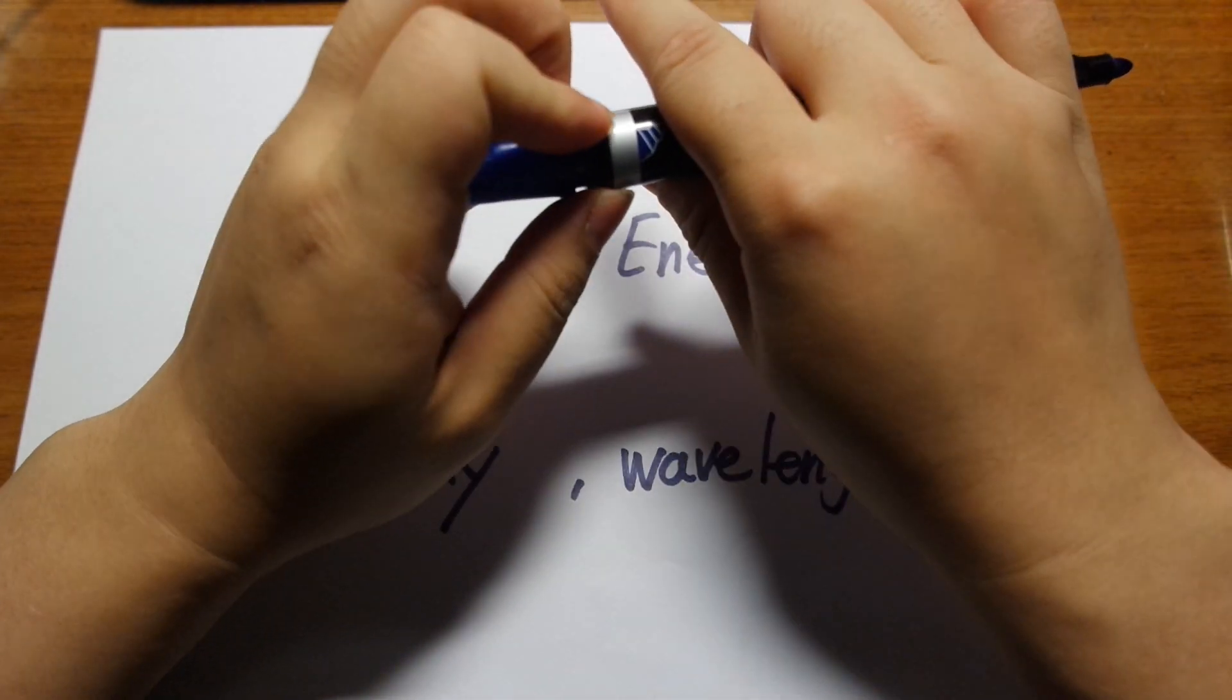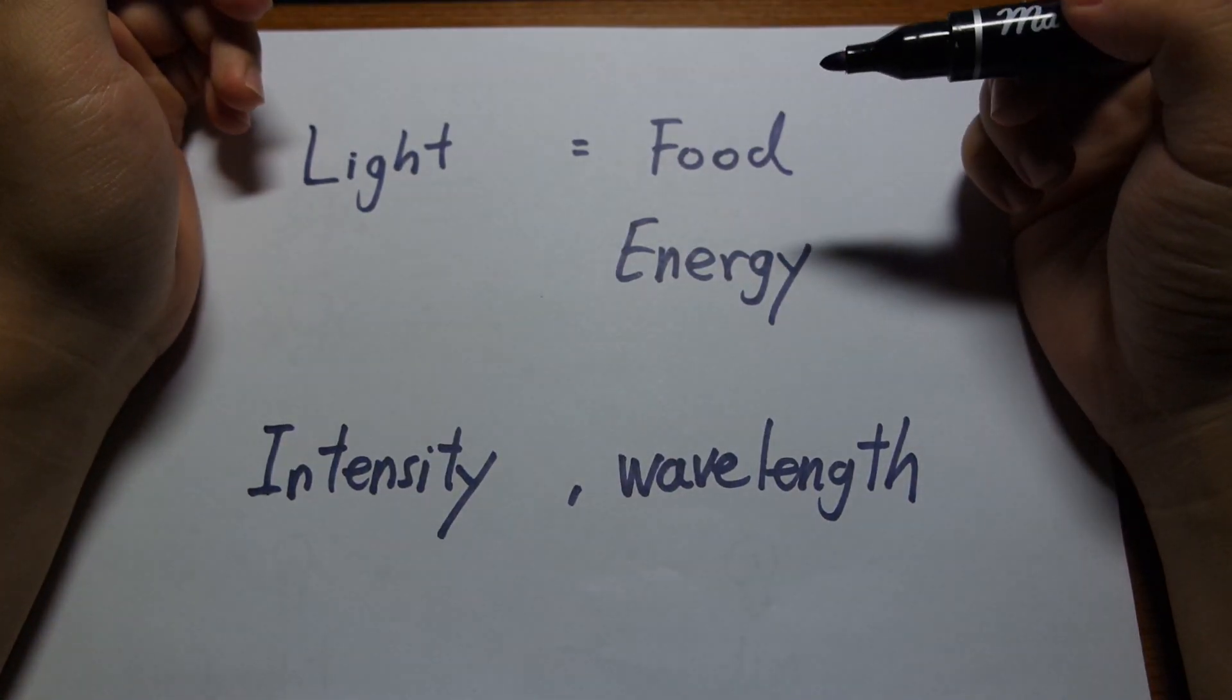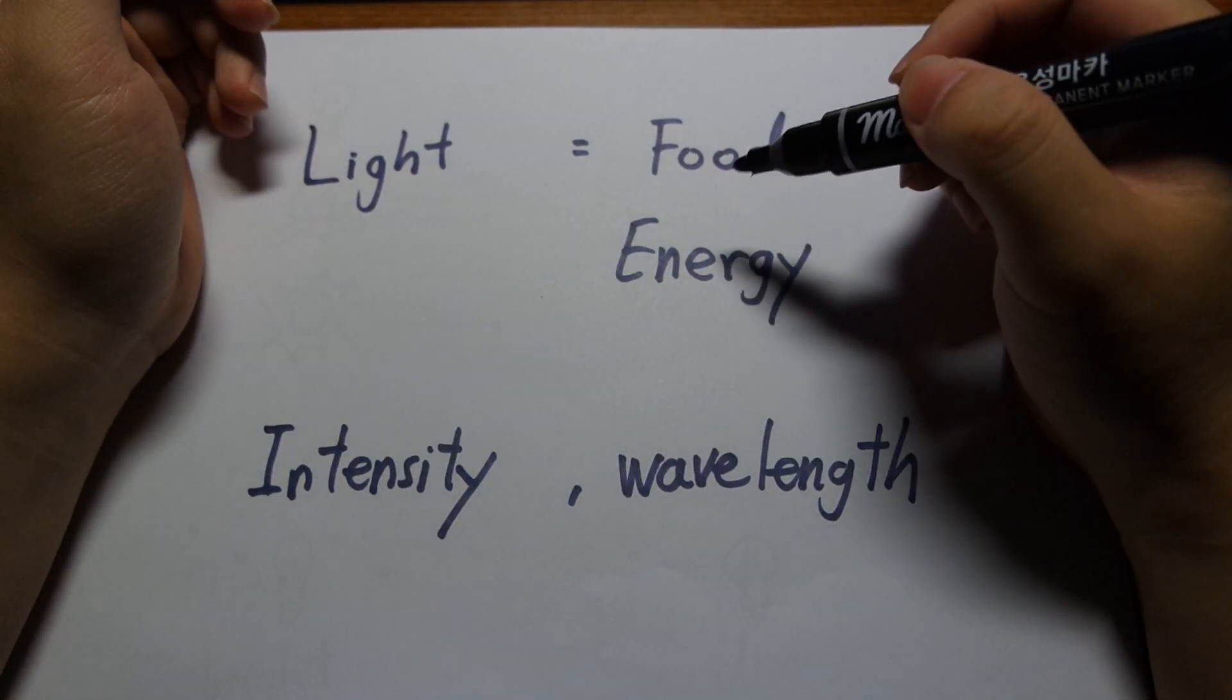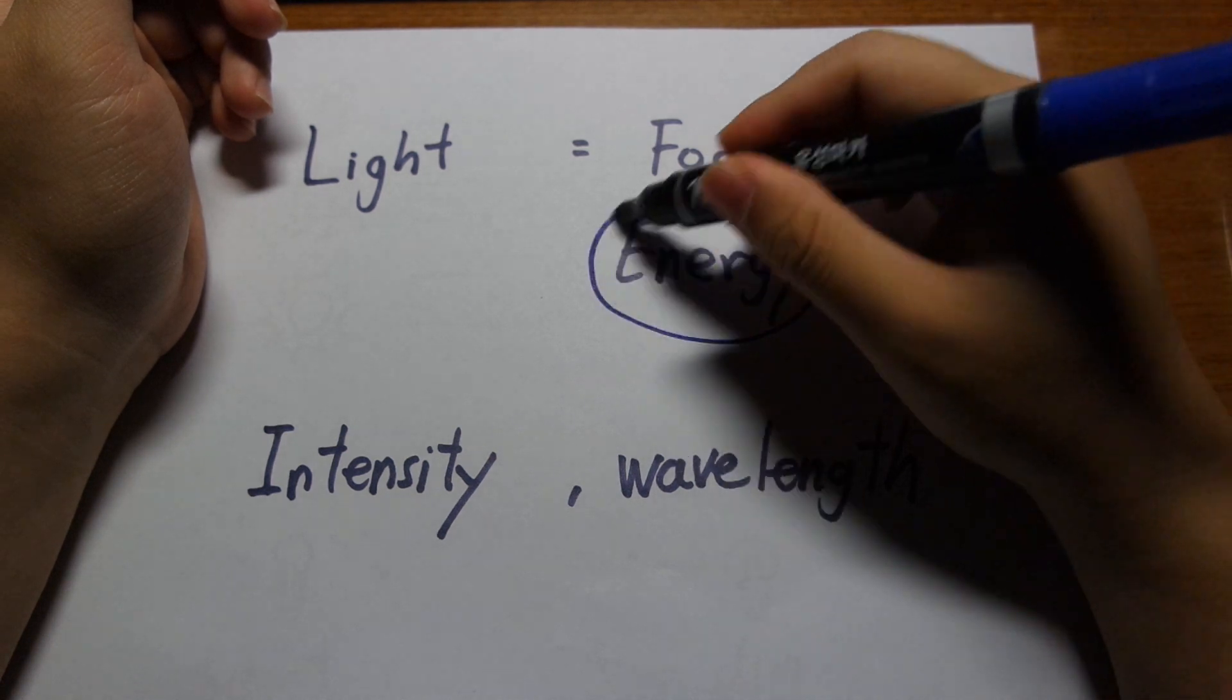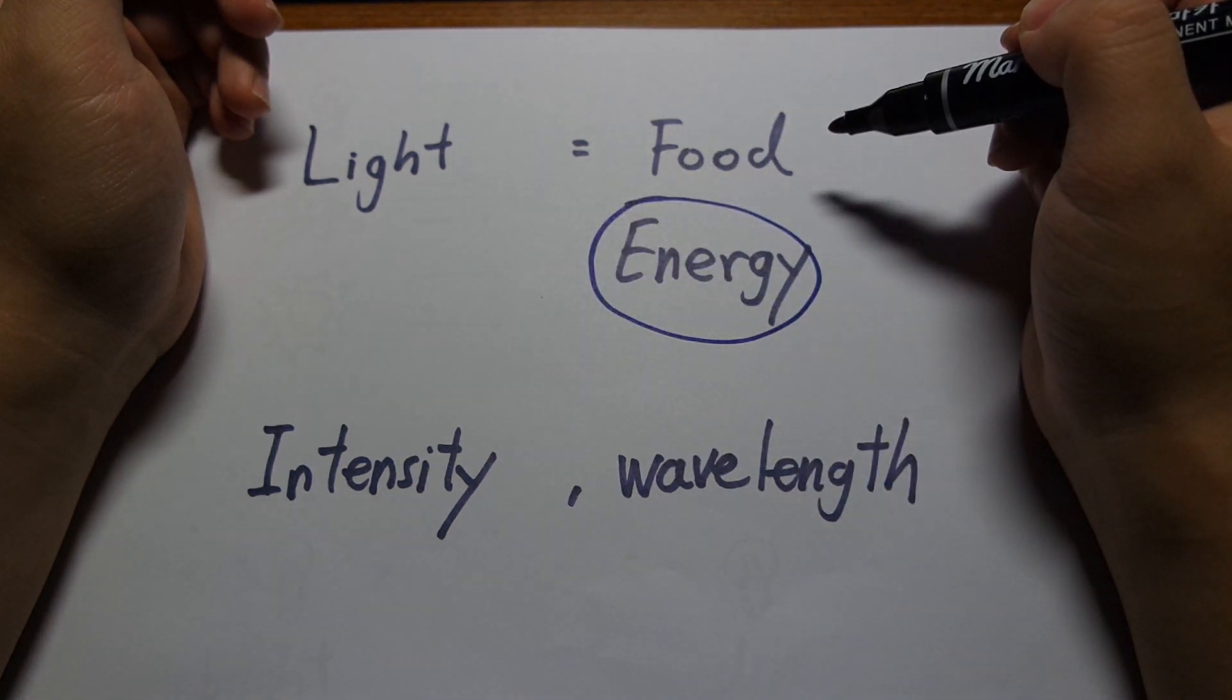So light, what is it? Light for plants is basically food. Just like we eat food, plants need light. And light is a little packet of energy. So that is what plants use. That's what they need.